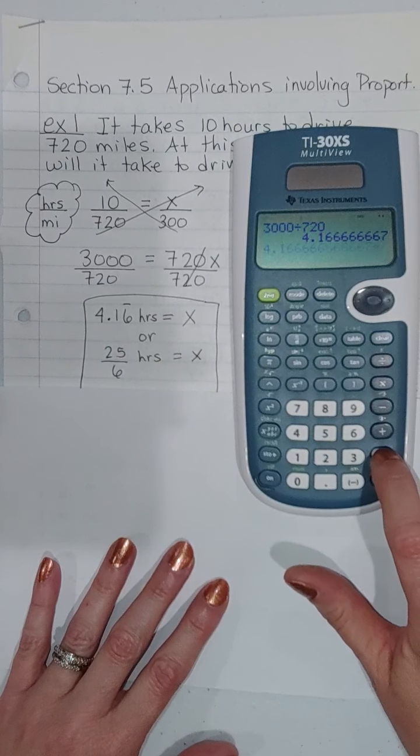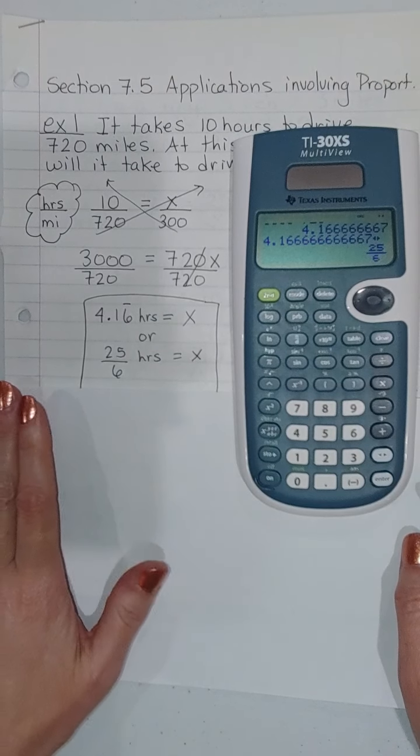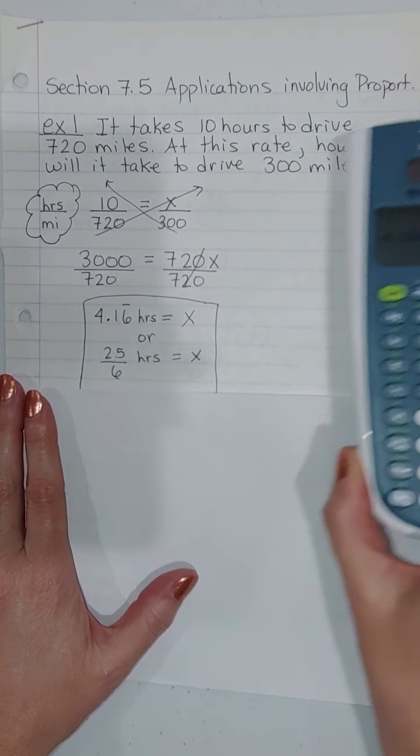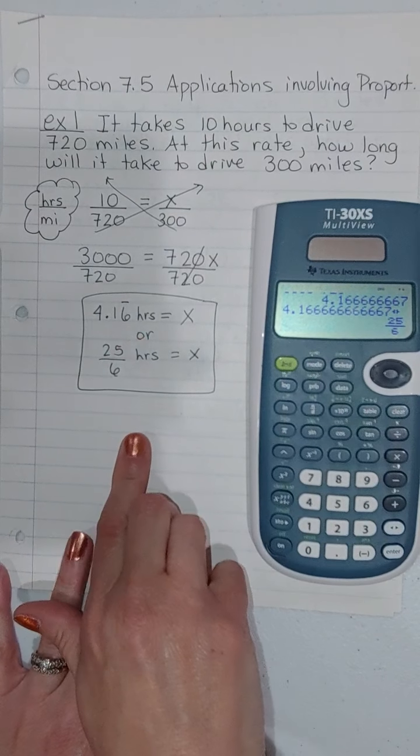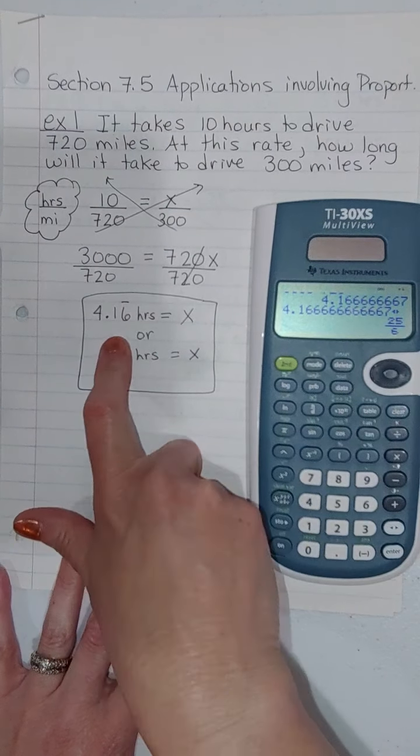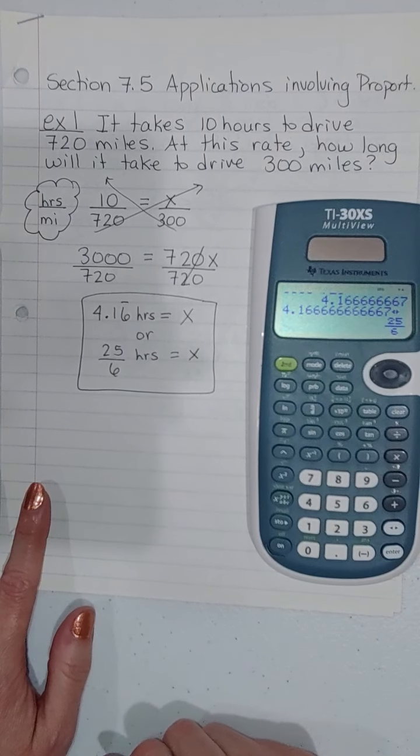3,000 divided by 720 is 4.16 hours. Or if you hit that toggle key, that's 25 over 6 hours. So a little over 4 hours. Make sure that your answers make sense with these kind of word problems. If you do this and you get something like 416 hours, good Lord, it's not that far. 300 miles? That's like Springfield or something, maybe something close to St. Louis. I mean, it wouldn't take you 416 hours to get there. Maybe if you crawled. So just make sure your answers make sense.